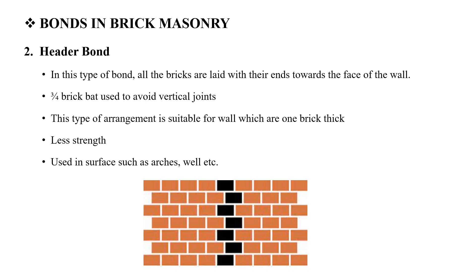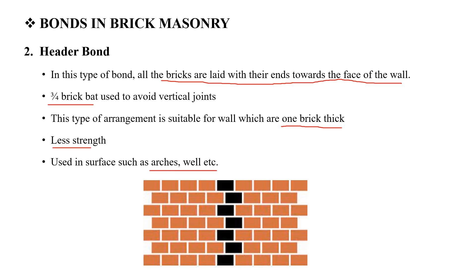The header bond: in this type of bond, all the bricks are laid with their ends towards the face of the wall. We use the header bond with vertical joints for a three-quarter bat band. It is used for a one-brick thick wall, but has less strength.